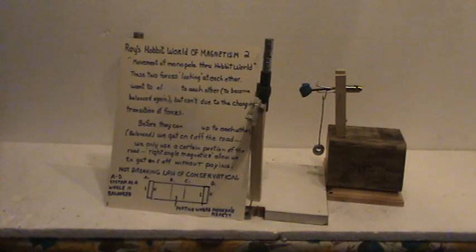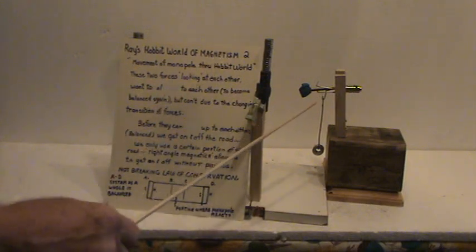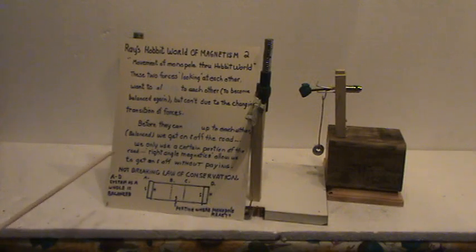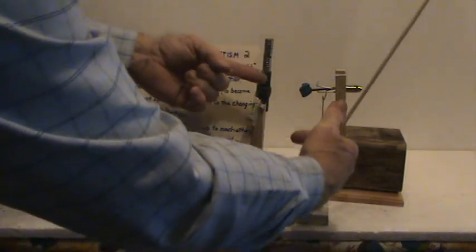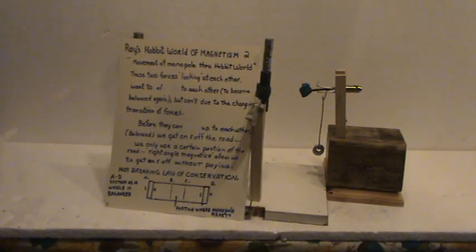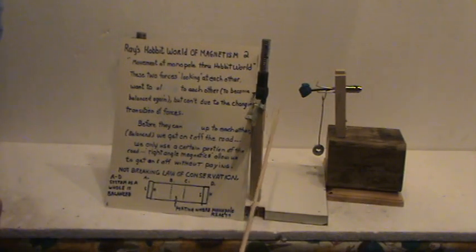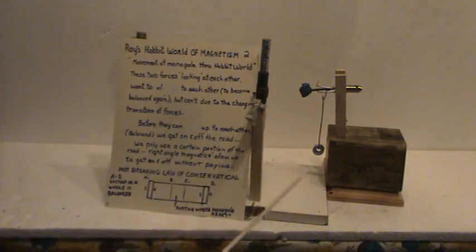Ray's Hobbit world of magnetism two. Movement of the monopole through this Hobbit world. This is my monopole, my output. These two forces, looking at each other, want to align. That's what that's supposed to say. They want to align up. So what they're trying to do, they want to align, but they can't due to the changing transition of forces. Before they can align up to each other, or become balanced, we get off and on the road. That's this portion here. The gate. I'm talking about getting on and off the road is my magnetic gate, which fires both ways. Which is really putting twice the efficiency to it.